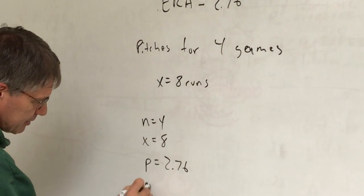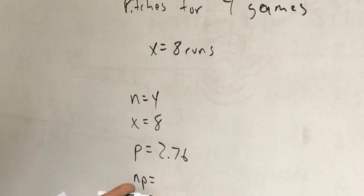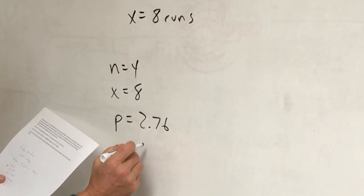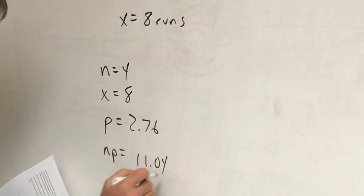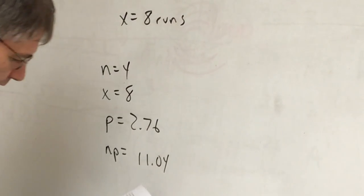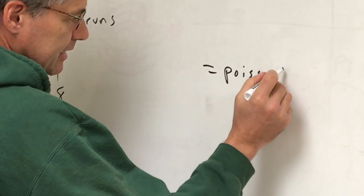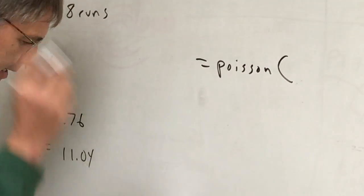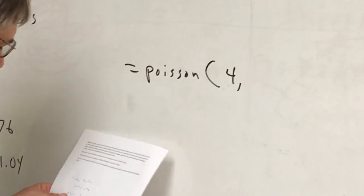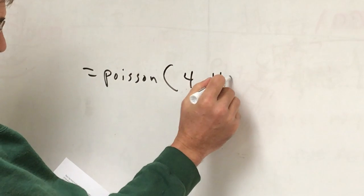So if I take n times p, this would be my average I expect to see for 4. That's actually equal to 11.04 runs. So if I type that all in to Excel, it would be 4. My n p would be equal to 11.04.